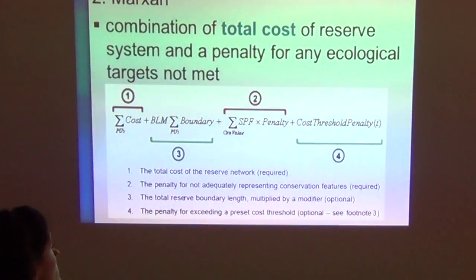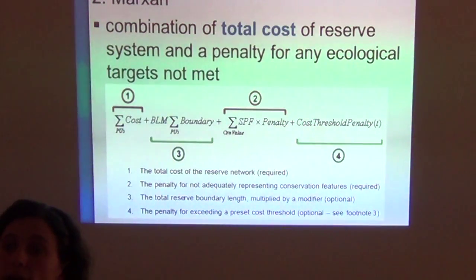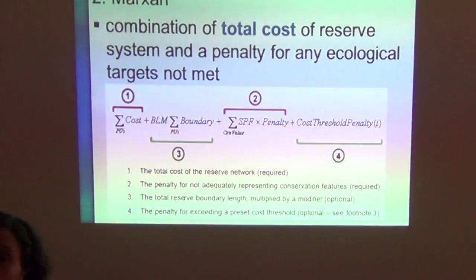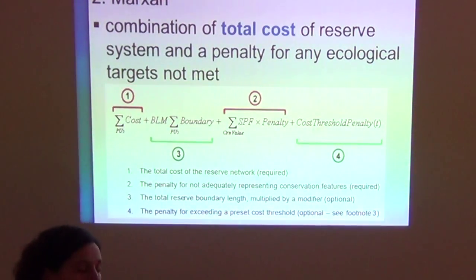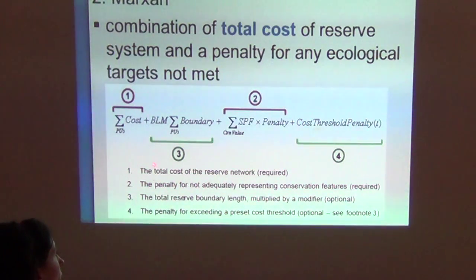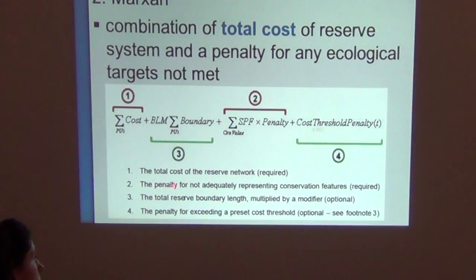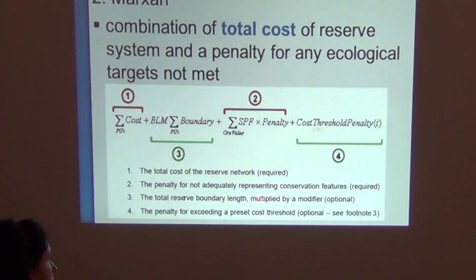Any ecological targets not met represent a penalty in this algorithm. By ecological targets we can think of fragmentation, edge effect, and connectivity — those could be examples of ecological targets. This is an equation that looks complicated, but basically components one and two are the total cost of the reserve network — one estimates total cost, number two estimates the penalty for not representing the conservation features.